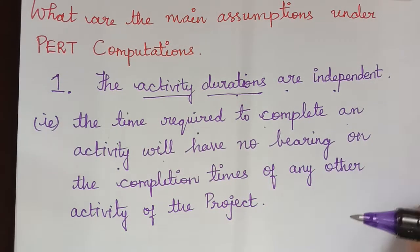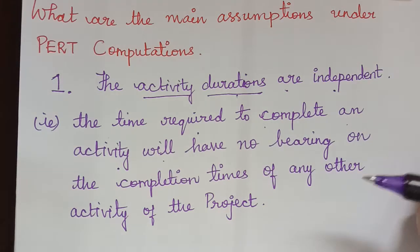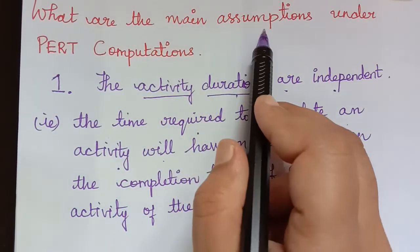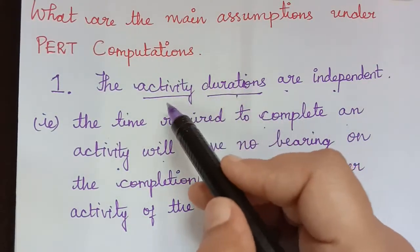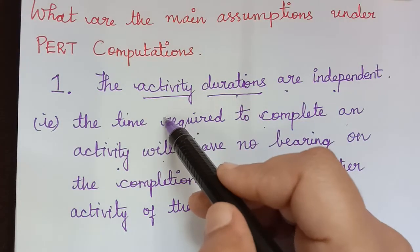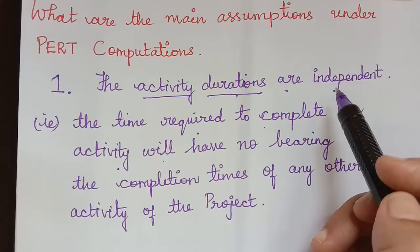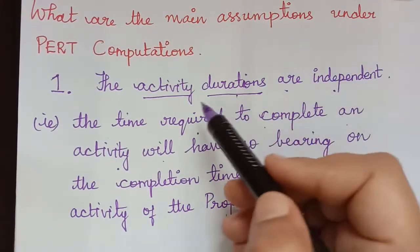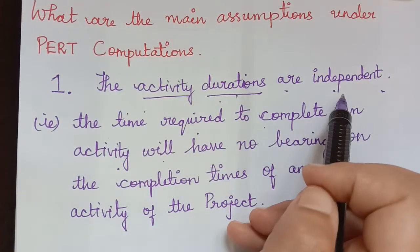But in job sequencing, we know that the completion of one job depends upon the completion time estimate of the other job. Whereas, here the main assumption is that the activity durations - that is, the time taken to complete one activity - does not bother the time taken to complete the other activity. So when they don't bother each other, definitely they are independent. Therefore, the activity durations are independent.